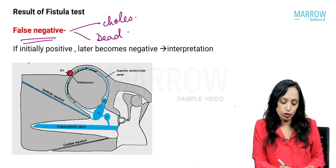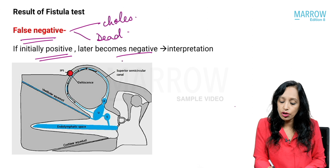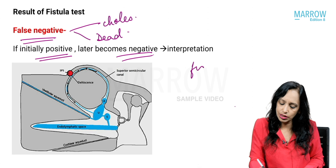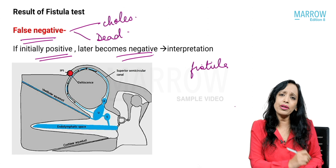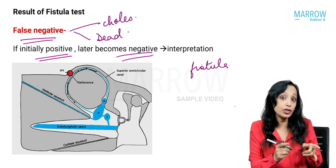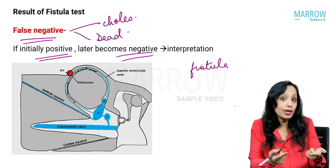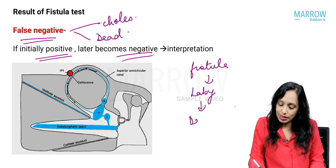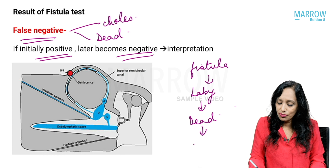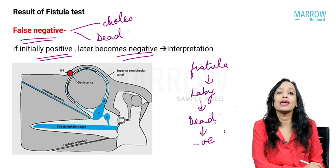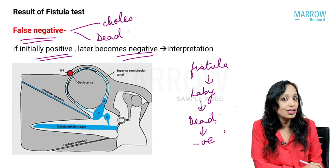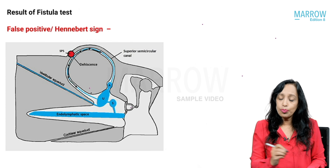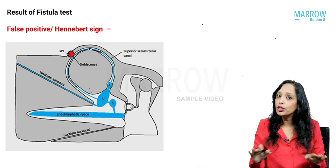An important exam question: if the fistula test was initially positive in a patient and later becomes negative, what happened? A positive test means the fistula was present. Then, because of the fistula, infection went inside, the patient developed labyrinthitis, and because of labyrinthitis the labyrinth died — because of which the test has now become negative.